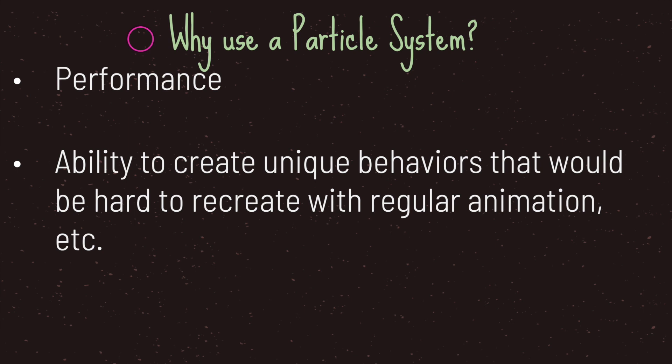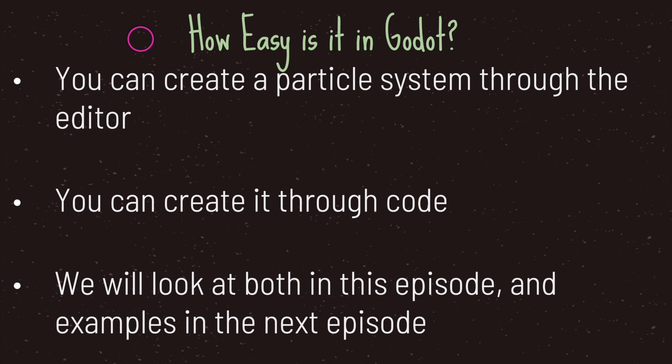Why would you want to use a particle system? For one thing, it increases performance. Along with that, you have the ability to create unique behaviors that would be hard to recreate with regular animation. Creating a particle system in Godot is easy — you can create one through the editor basically without code, or you can use code if that's the route you want to take. In this episode we will look at methods and properties, and in the next episode we will look at examples. This topic is split into two episodes.